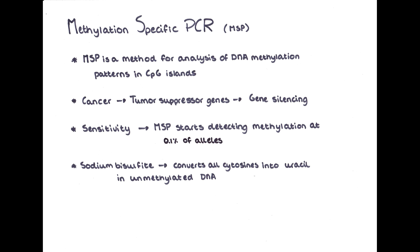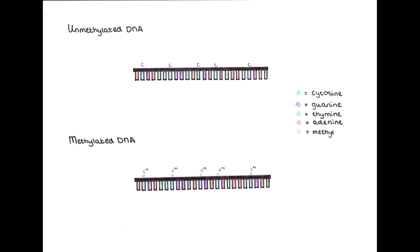Sodium bisulfite is used to convert all unmethylated cytosines from CpG islands to uracil. The difference between a methylated and unmethylated cytosine is the extra methyl group attached to the cytosine. Transcription factors will not be able to bind to the methylated DNA, which leads to the suppression or silencing of the gene.